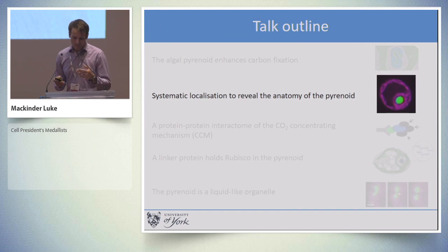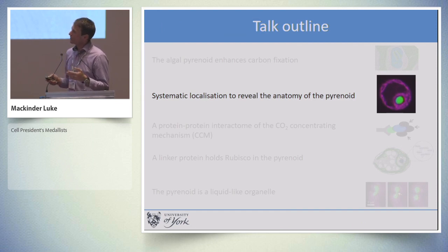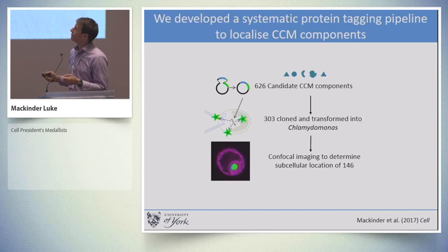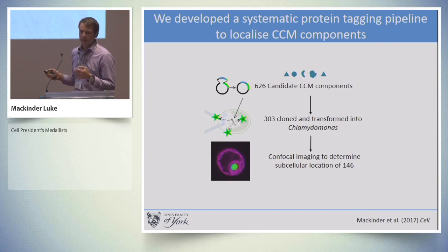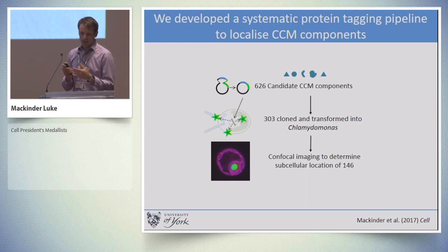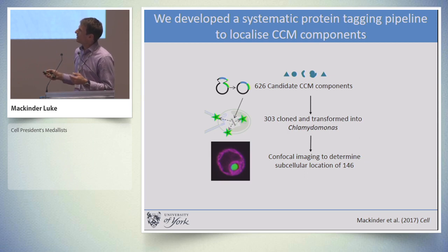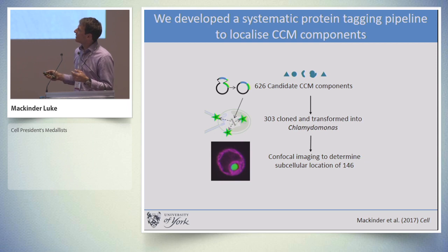This led us to thinking of approaches we could use to start to answer these questions, and one was to develop a high-throughput fluorescent protein tagging pipeline. We took 626 candidate components of the pyrenoid and CO2 uptake and developed a high-throughput fluorescent protein tagging approach. We successfully tagged 303 of these components and got high-quality imaging data for 146.